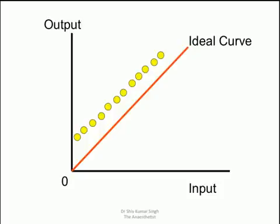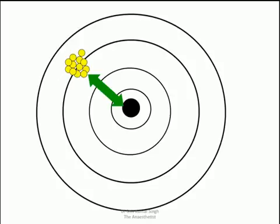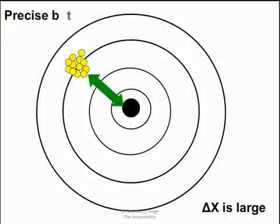Now look at this graph. Here all the values are falling in a line. And if you see it they are far away from the target. But every time you make a measurement it's absolutely the same measurement. The degree of error remains the same. So this is exactly precise but not accurate.